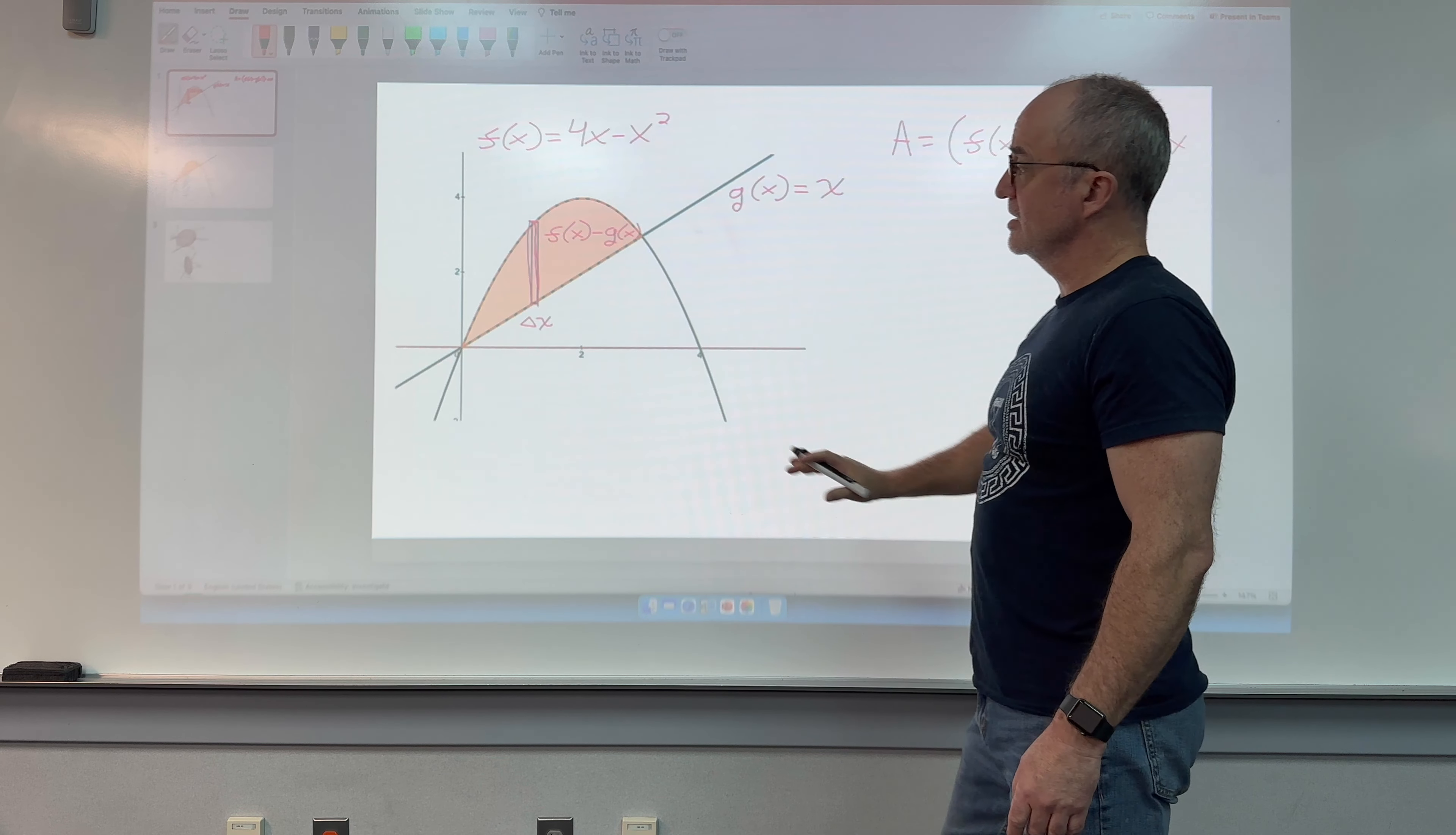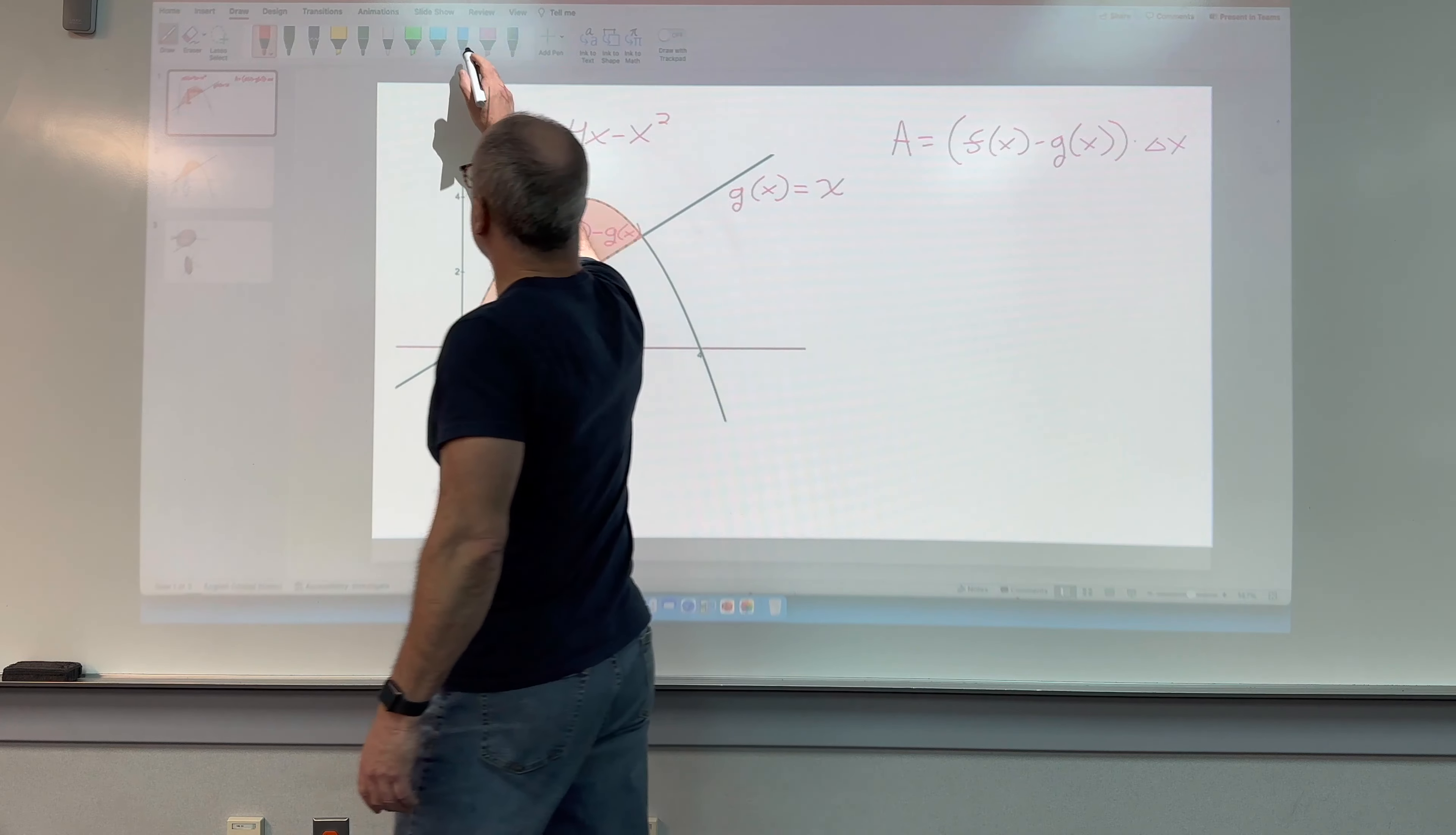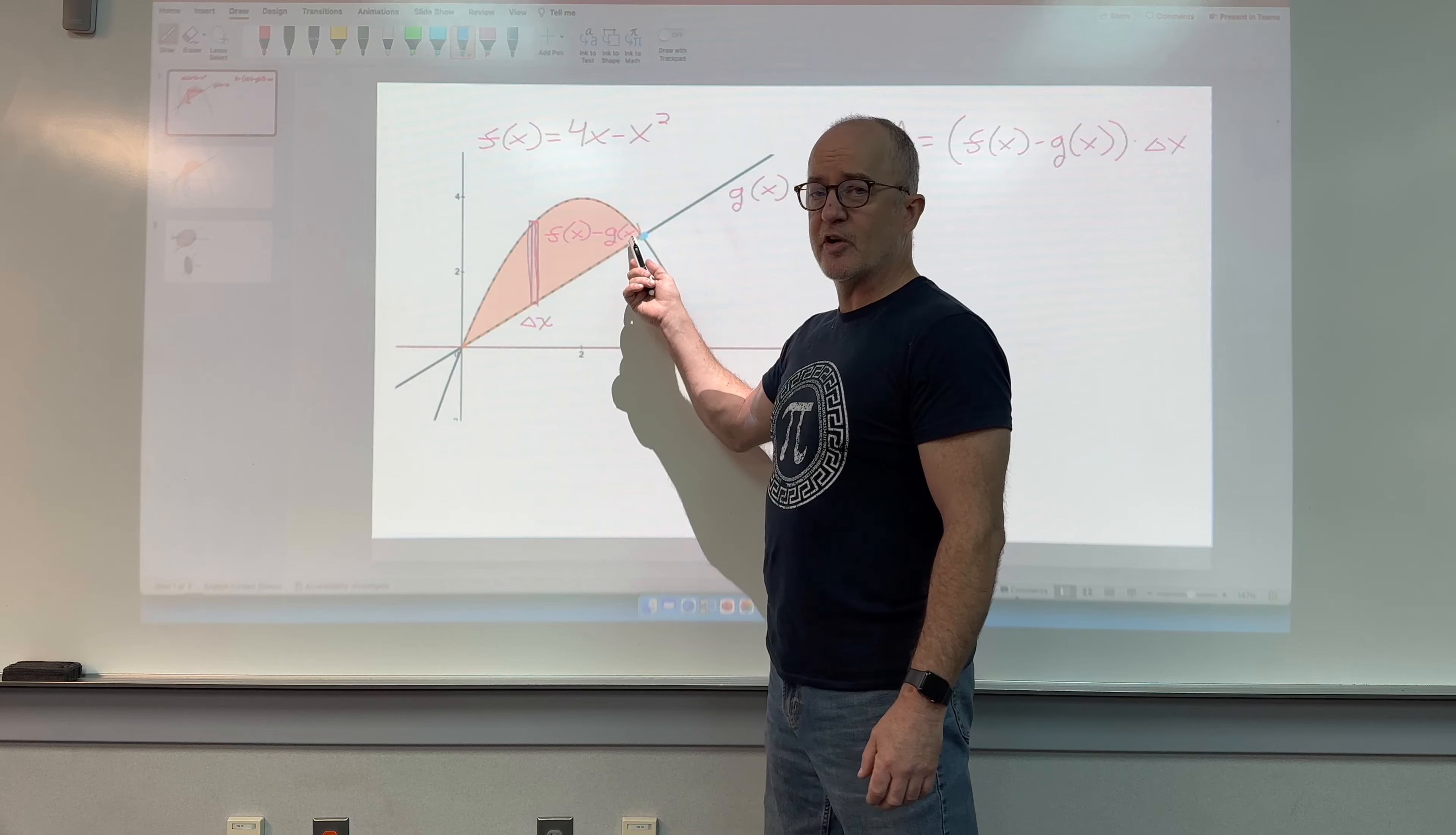The area of my single Riemann rectangle would be its height, f of x minus g of x, times delta x. The area of an infinite number of these rectangles added together would be an integral, but wait, there's one thing I haven't done yet. I don't know where they intersect.